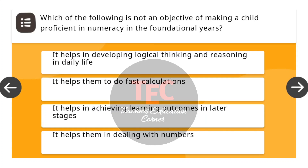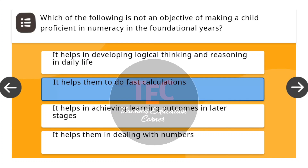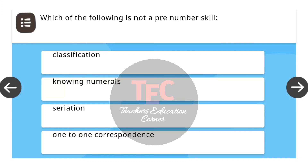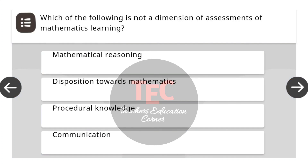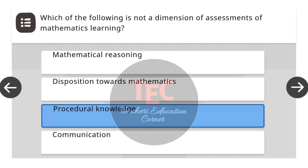Next question: Which of the following is not an objective of making a child proficient in numeracy in the foundational years? The correct answer is it helps them to do fast calculations. Next question: Which of the following is not a dimension of assessments of mathematics learning? The correct answer is procedural knowledge.